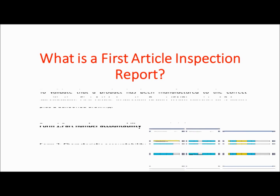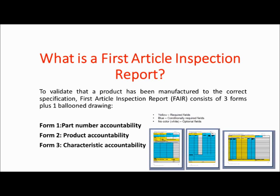To validate that a product has been manufactured to the correct specification, the first article inspection report, or FAIR, consists of three forms: Form 1 — Part Number Accountability; Form 2 — Product Accountability; and Form 3 — Characteristic Accountability, plus one balloon drawing.